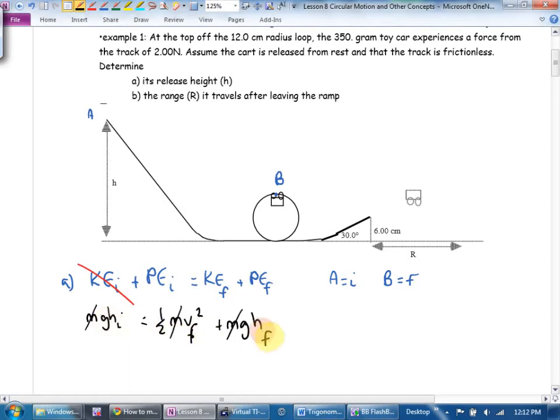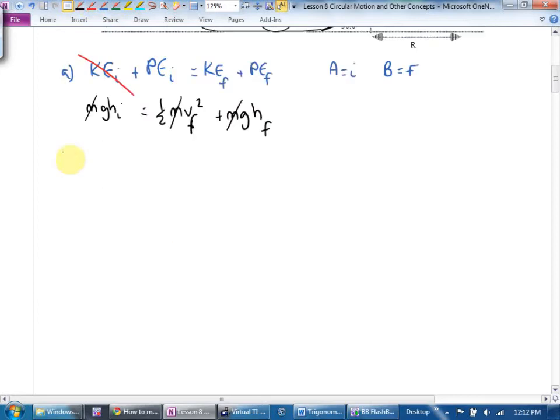Are any of these zero? It does say starts from rest. Am I on the ground right here? Nope. Am I stopped right there? Nope. So none of these are zero. Now I'm going to expand this. Mgh initial equals a half mv final squared plus mgh final. I do notice that they didn't need to tell me how much the car weighed, which is kind of nice.